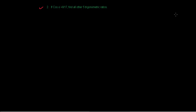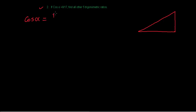Trigonometry deals with a right angle triangle, so let's first draw a right angle triangle. Now, we know that cos is the ratio of base upon hypotenuse, so cos alpha equals base upon hypotenuse, which is 8 upon 17.